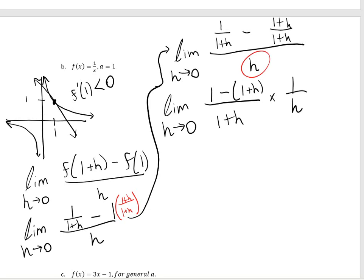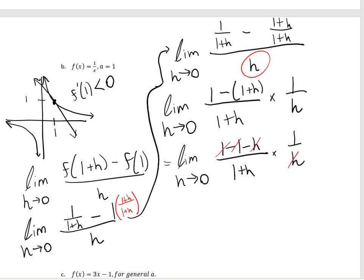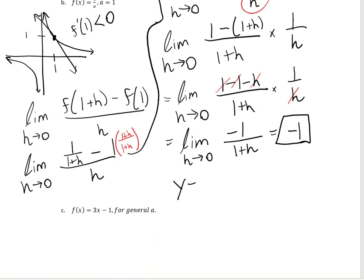Dividing by h is the same as multiplying by 1 over h. This simplifies to the limit as h approaches 0 of 1 minus 1 minus h, divided by 1 plus h, times 1 over h. The 1s cancel, leaving negative h on top. That negative h cancels with the h, so we're left with the limit as h approaches 0 of negative 1 over 1 plus h, which gives us negative 1 for our slope. So the equation for our tangent line is y minus 1 equals negative 1 times x minus 1.